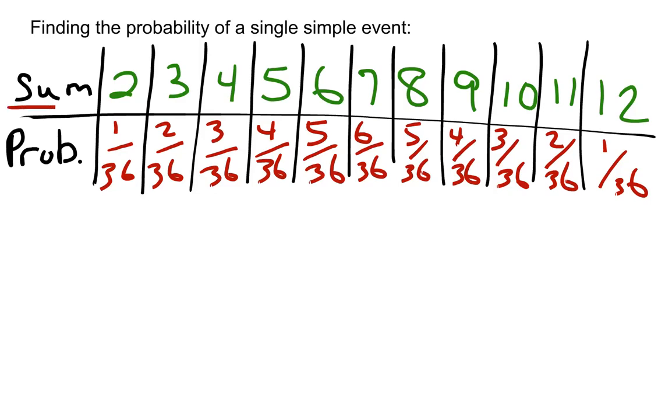The first row, for our sum, we have the different possibilities. You can roll a 2, a sum of 3, a sum of 4, 5, 6, and so on, all the way up to 12.